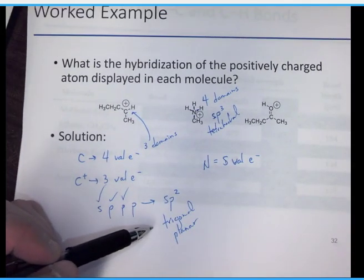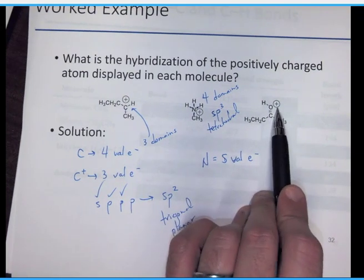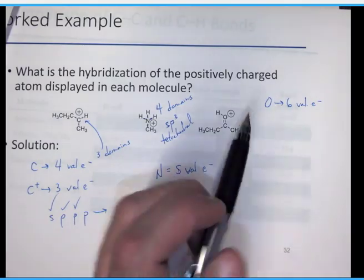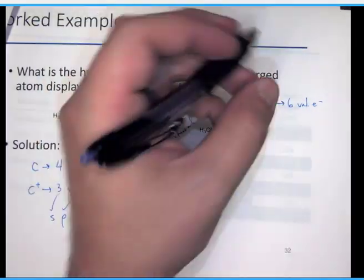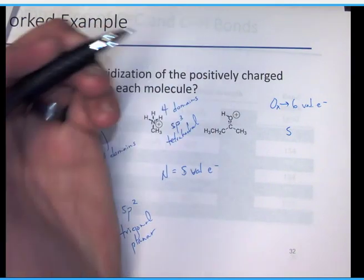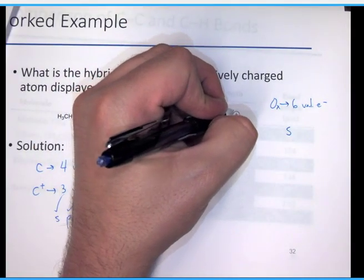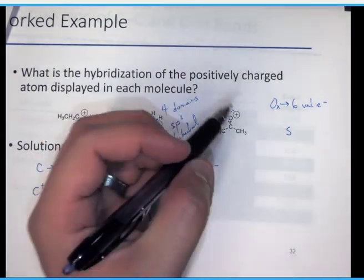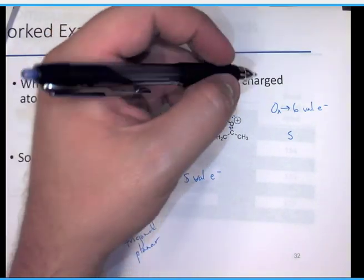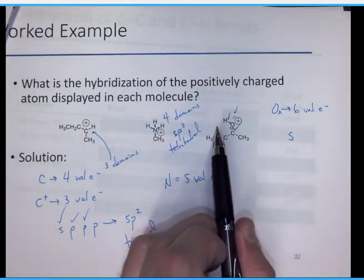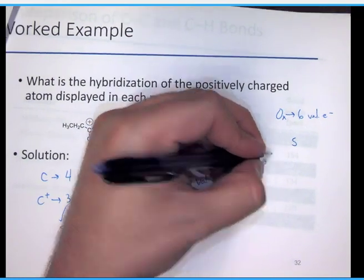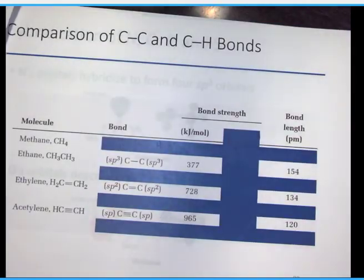A positively charged oxygen started with six valence electrons and now has five (lost one electron due to +1 charge). Three bonds are shown, accounting for three electrons; the remaining two form a lone pair. Now counting domains: one, two, three bonds plus one lone pair — but we count sigma bonds and lone pairs, giving three domains. This oxygen is sp2 hybridized and therefore trigonal planar.